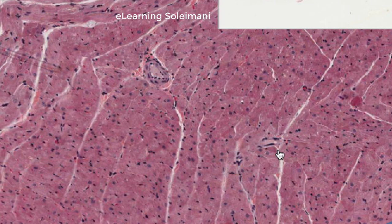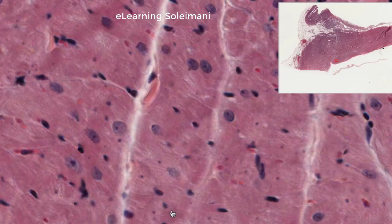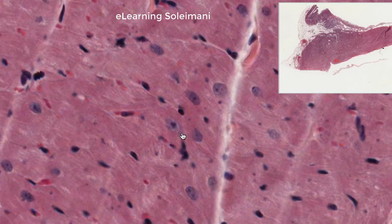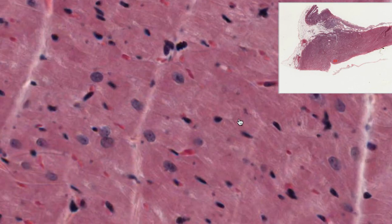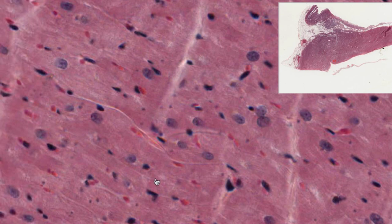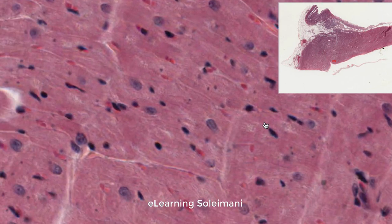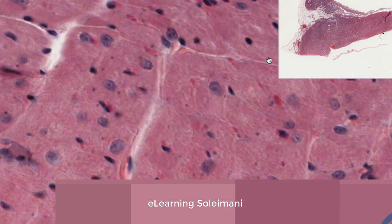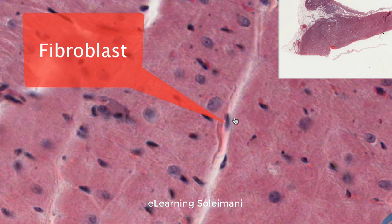Here we observe the transverse section of the cardiac muscle, where no nucleus may be visible in some cells because they were not cut through the nucleus. Depending on the location of the slice, some cells may have nuclei and others may not. You can also see connective tissue, including fibroblasts, between cardiac muscle cells.